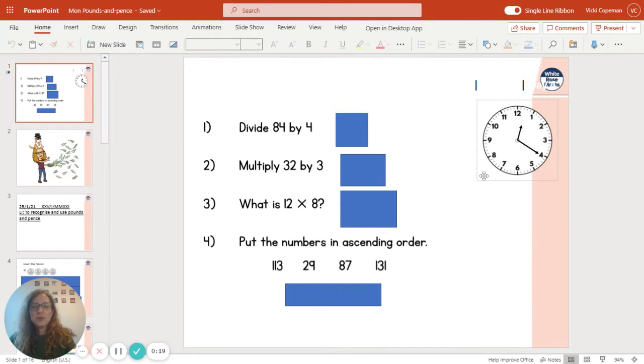Okay, so 84 divided by 4, you could partition, you could use your place value grid, you could use another method you're happy with to get the answer of 21.